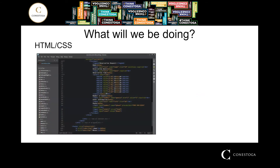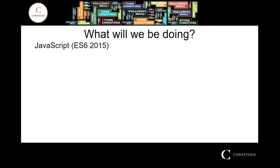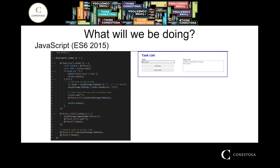You'll be learning HTML and CSS — here's a snippet of HTML and the output, which turns out to be a reservation request page. Some JavaScript: the ES6 2015 standard is what we'll be learning. As you can see on the side, there's a snippet of JavaScript that creates a task list for us to use. Basic JavaScript leads to more interactive elements on your websites.